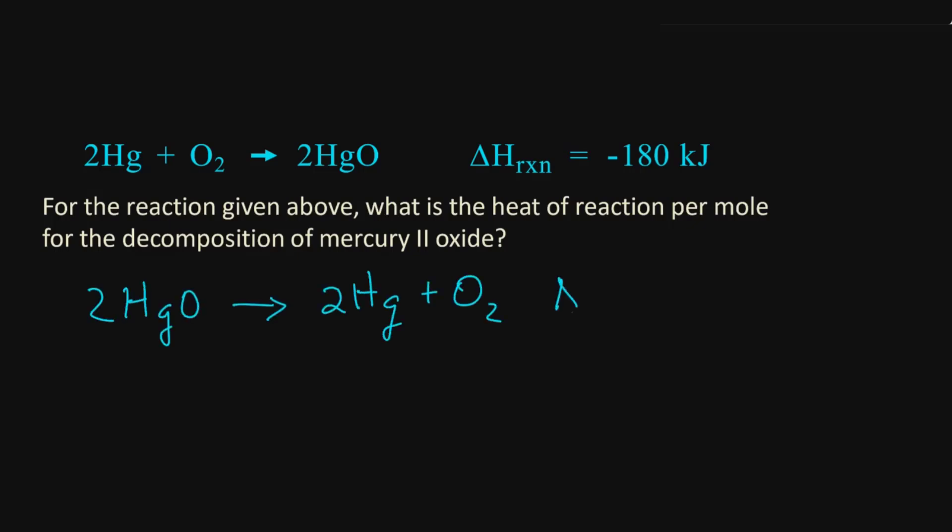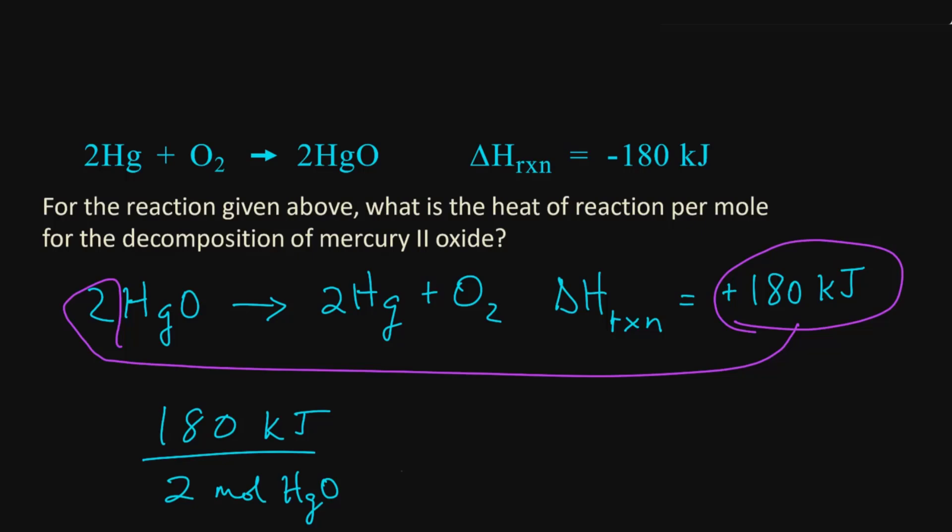And that will give us the correct sign for the heat of reaction, which is a positive 180 kilojoules. However, that energy term is for 2 moles of HgO. And so we divide 180 kilojoules by 2 moles. And that gives us the heat of reaction per mole, 90 kilojoules per mole.